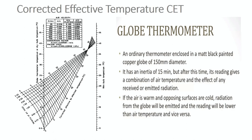The globe thermometer is an ordinary thermometer enclosed in a matte black painted copper globe of 150 mm diameter. If the air is warm and opposing surfaces are cold, radiation from the globe will be emitted and the reading will be lower than air temperature. It has an inertia of 15 minutes, but after this time its reading gives a combination of air temperature and the effect of any received or emitted radiation. That is it for the meteorological environment. Thank you.